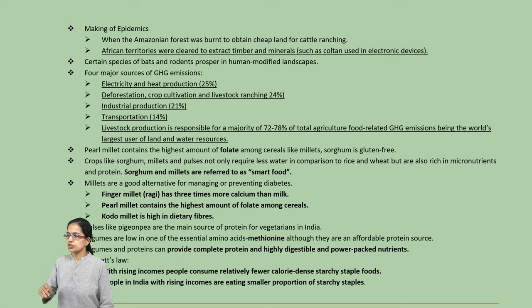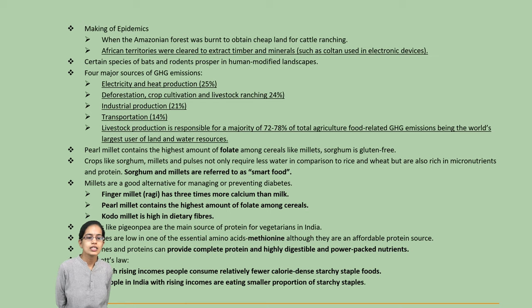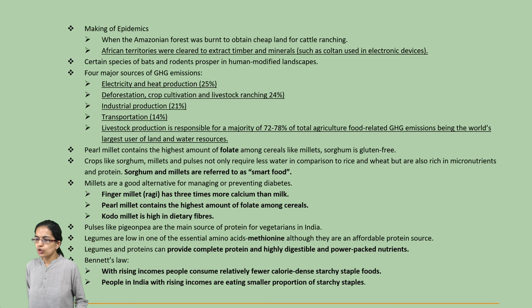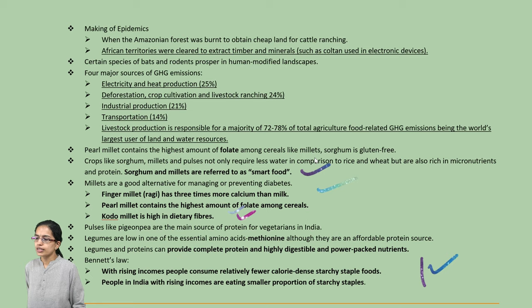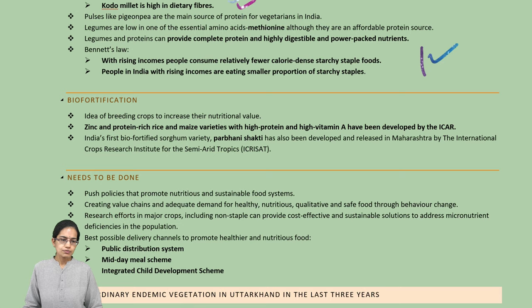There are various sources of greenhouse gases including electricity, heat production, deforestation, industries, and transport. Regarding crops, pearl millet is a significant high source of folate. Sorghum and millet are considered smart food. Ragi has three times more calcium than milk. Kodo millet is known for dietary fibers. It is very important that we consume not only starchy foods but also foods rich in various nutrients and micronutrients. Biofortification has been increased significantly.